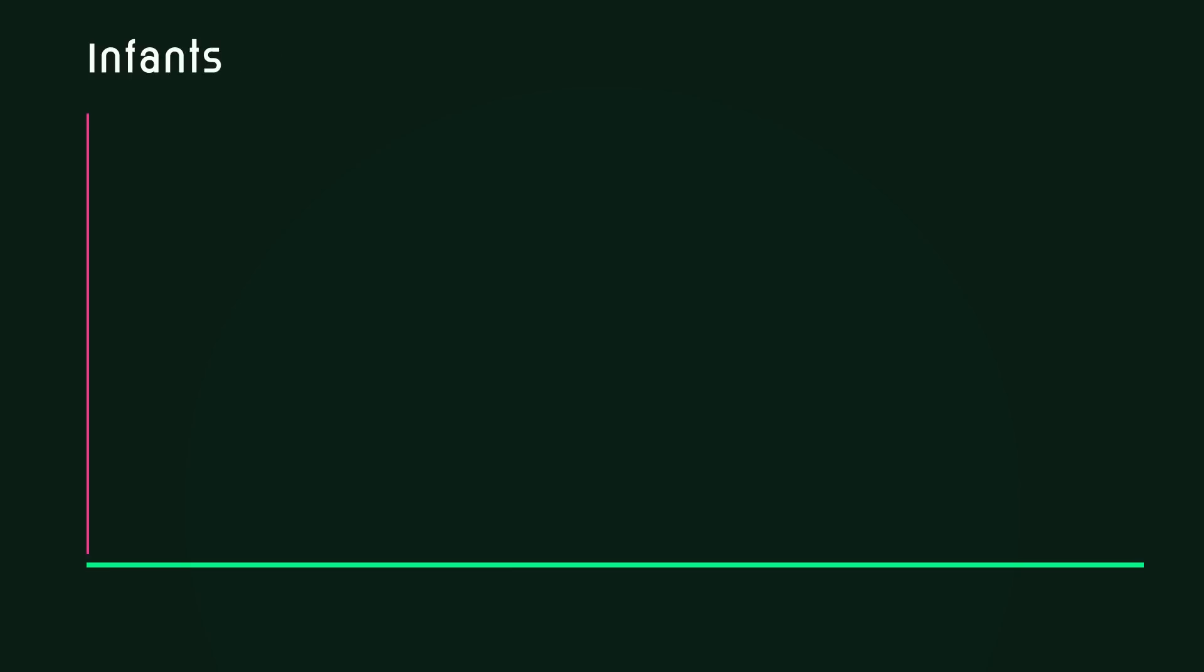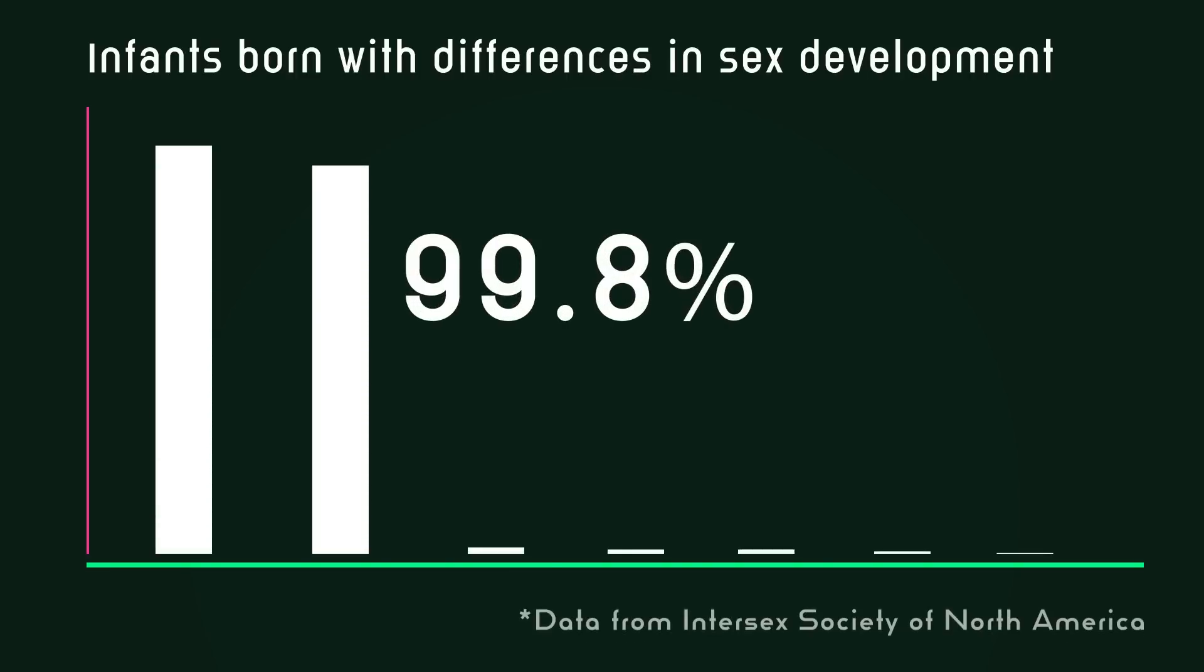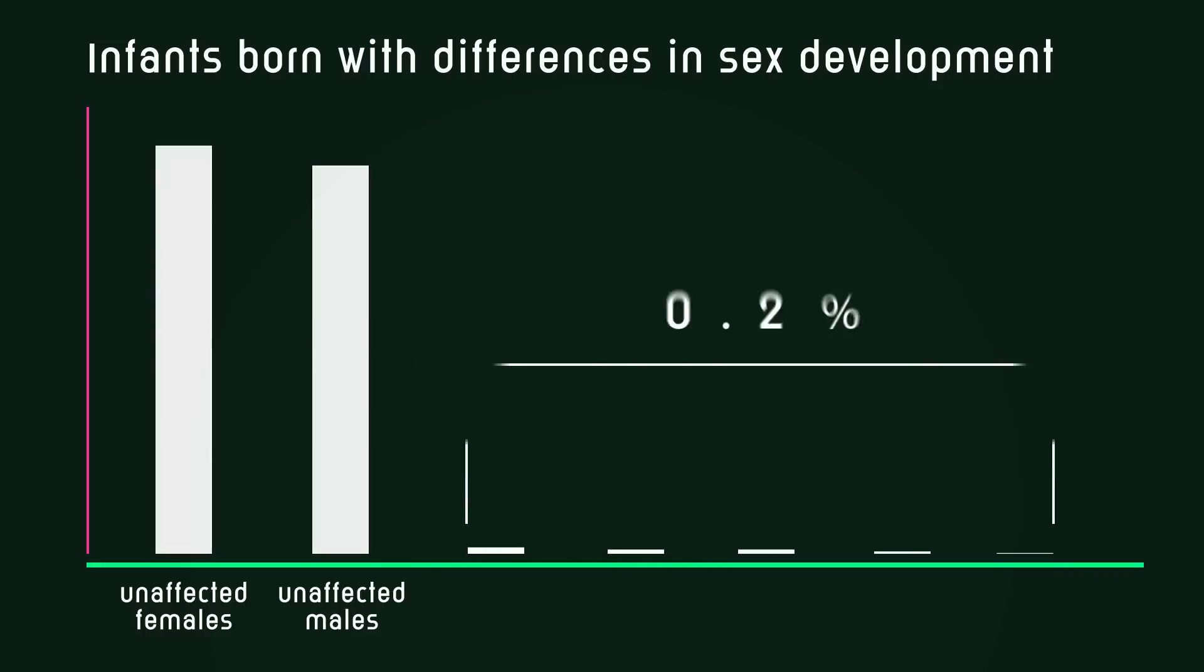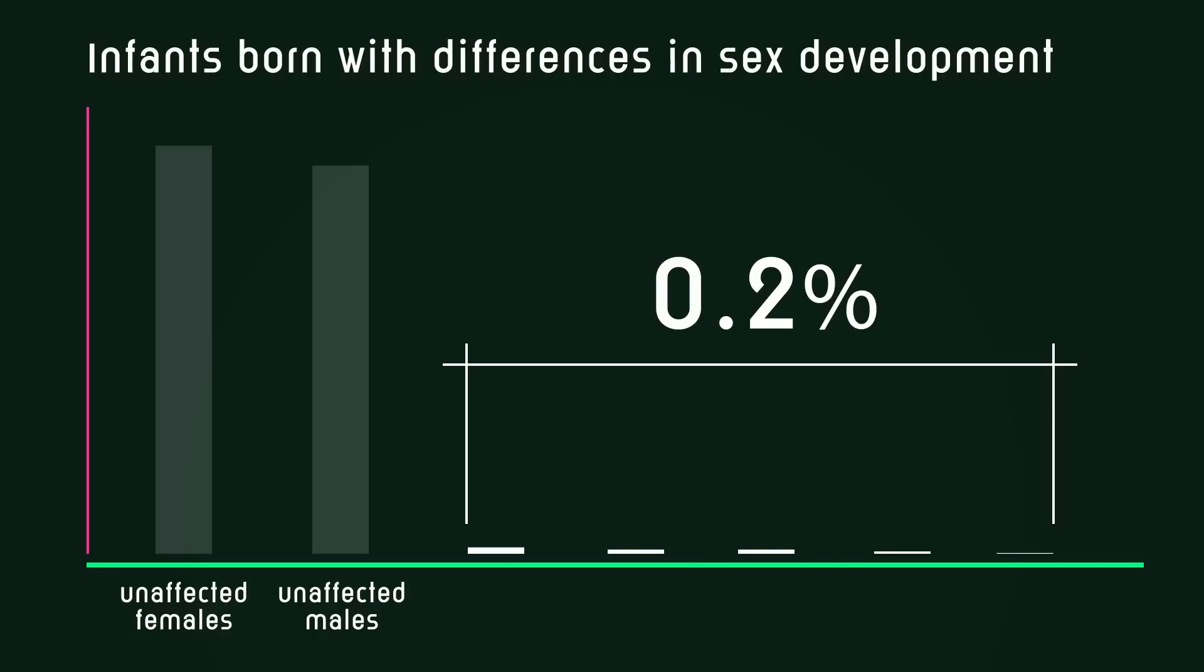A graph on the percentage of infants born with differences in sex development shows us that 99.8% of births are unaffected males or females with typical chromosomal arrangements and typical body structures. Of the 0.2% of births with intersex conditions, most of these infants are also unambiguously male or female.